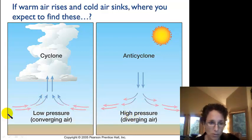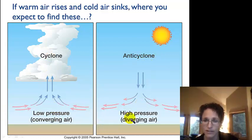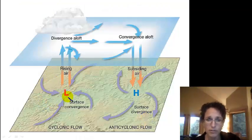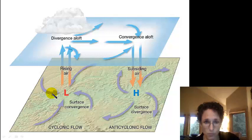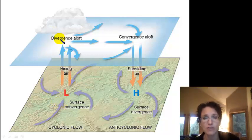In our low pressure system, we have air that's converging and rising. And in our high pressure, we have sinking air that diverges at the surface. So our low pressure system at the surface has surface convergence, rising air, and then divergence aloft.